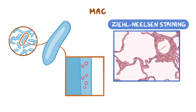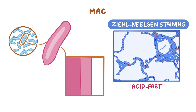The stain binds to the mycolic acid in the mycobacterial cell wall, and after staining, an acidic decolorizing solution is applied which removes the red dye from the background cells, tissue fibers, and any organisms in the smear except mycobacteria, which retain the dye. This is why they're called acid-fast, and they appear bright red on a blue background.